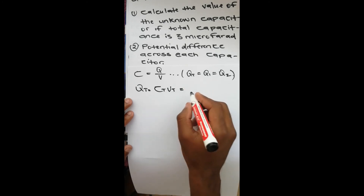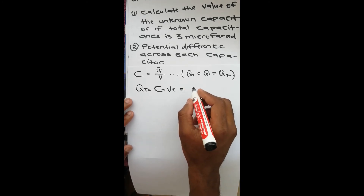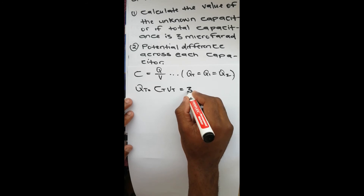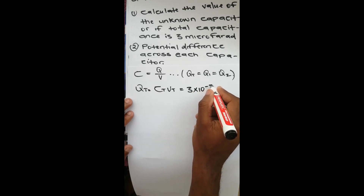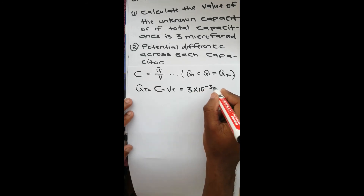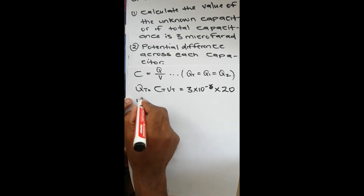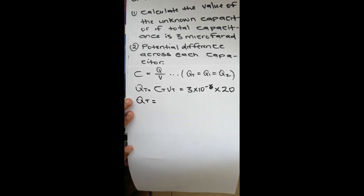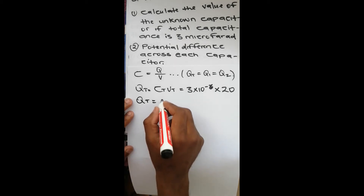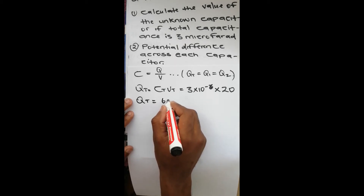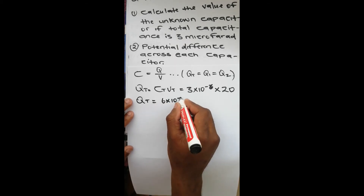Therefore, to get our QT, we use QT equals CT times VT. Our total capacitance is three times ten to the power negative six, multiplied by twenty volts, which gives us six times ten to the power negative five coulombs.